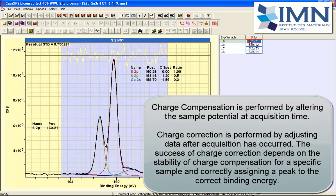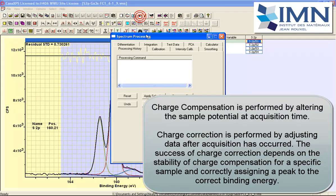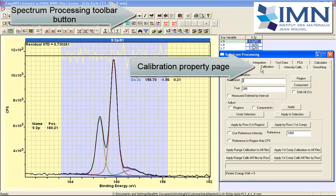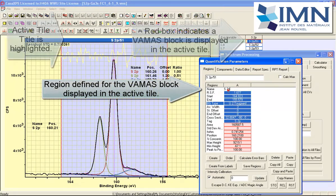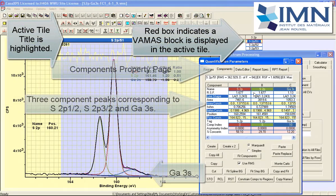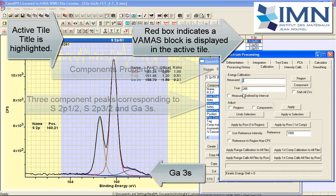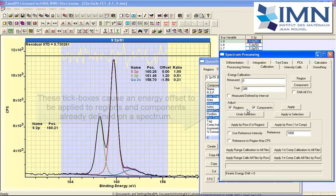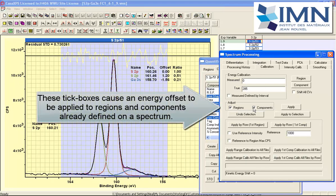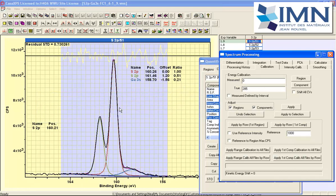Let's select one and perform charge correction based on the spectrum in the active tile and using the apply button. Now we already have on these data a region and we also have components. So when we perform the compensation, in other words when we shift the binding energy scale, we have an option that lets us shift the regions or components or we can not shift the regions and components. This gives some flexibility when applying charge correction so that you can move data relative to components.